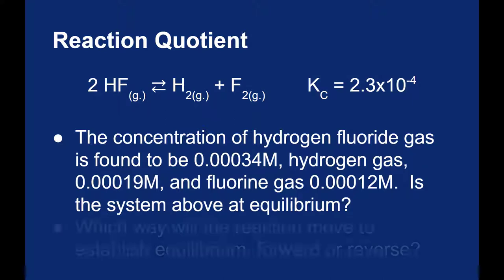And then a follow-up question, if it's not at equilibrium, what's going to happen to the reaction to get to equilibrium? Will it favor the forward reaction to make more hydrogen and fluorine, or will it favor the reverse reaction in order to make more hydrogen fluoride?